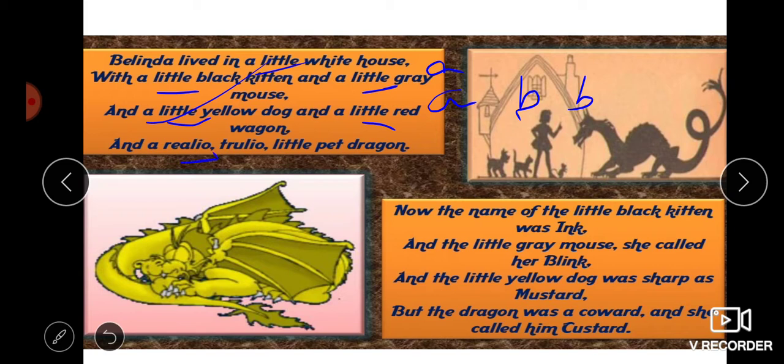'Realio Trulio' means 'really truly' — a very true, very real pet dragon she also keeps. The poet wanted to stress that she really, truly has a real dragon as a pet. Writing 'Realio Trulio' instead of 'really truly' is just to maintain the rhyming scheme — this is called poetic license, the liberty left with the poet.